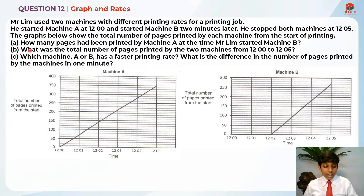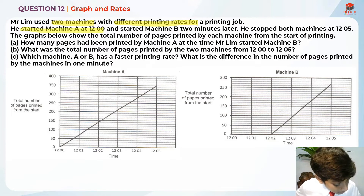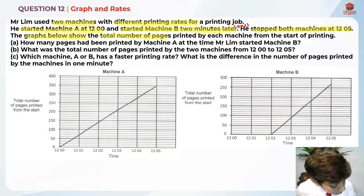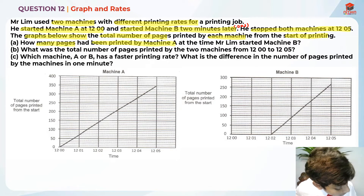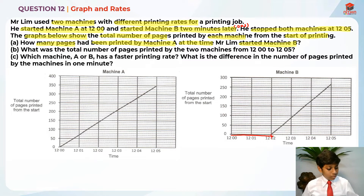For Part A, they are asking us how many pages have been printed by machine A at the time Mr. Lim started machine B. So basically, let's highlight the key information. He used two machines with different printing rates. He started machine A at 12, started machine B two minutes later — so this is basically 12.02. He stopped both machines at 12.05. So they are asking us to find how many pages were printed from 12 to 12.02.